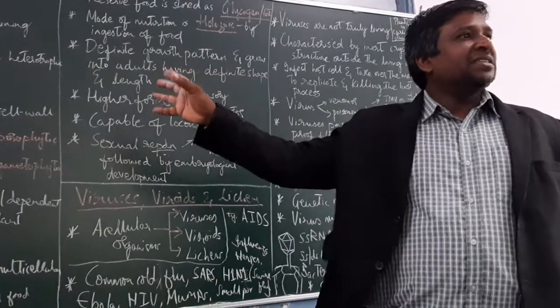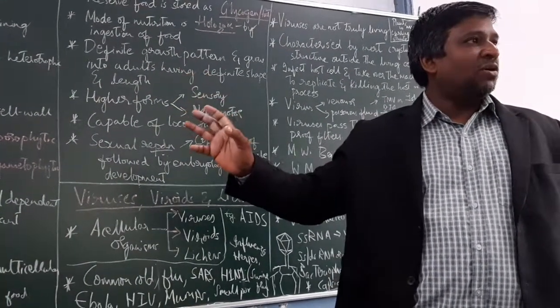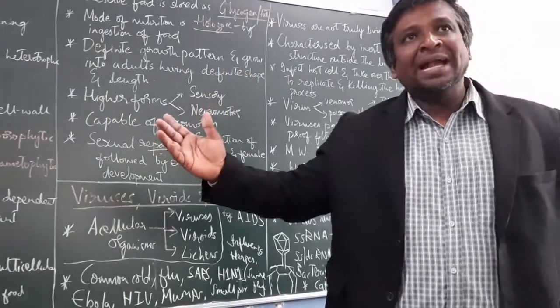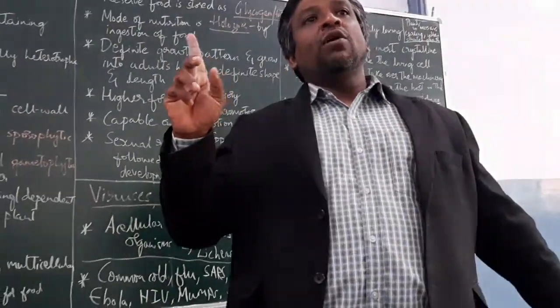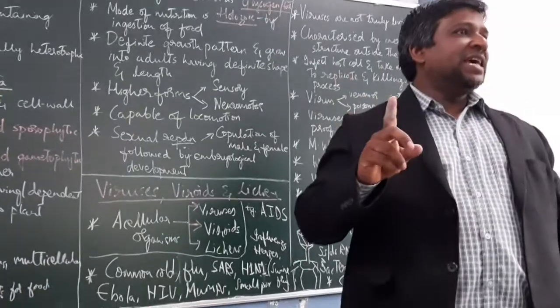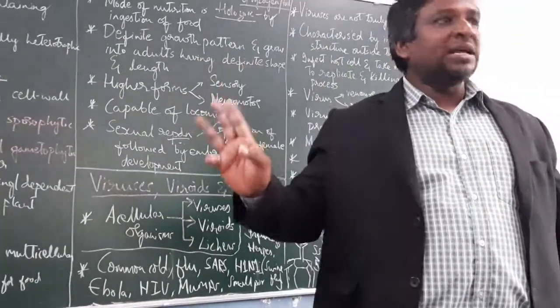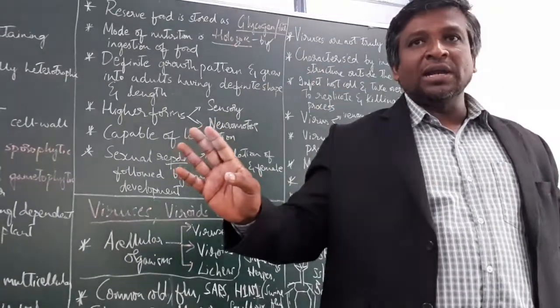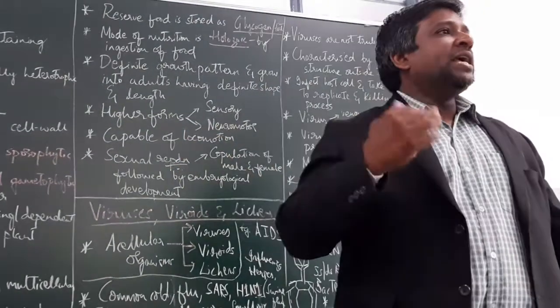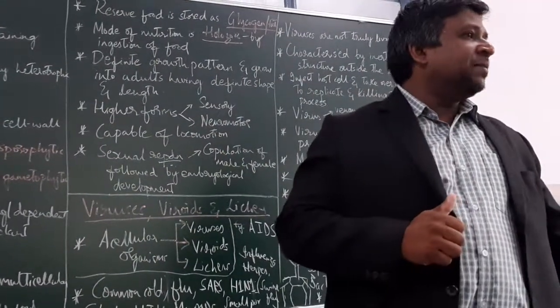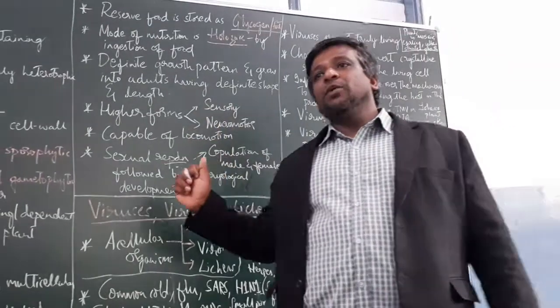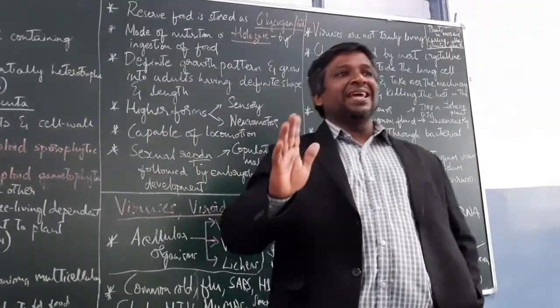In brief, some general characteristic features of Kingdom Plantae: they are all eukaryotic organisms with true nucleus, nuclear membrane, and double membrane cell organelles. The ribosomes are of 80S type with a larger 60S subunit and smaller 40S subunit.